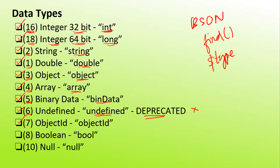The next data type is the object ID data type. The number assigned is 7 and the alias is 'objectId'. As you may already know, for each document in MongoDB there is a default object ID which acts as a primary key.